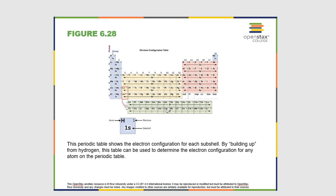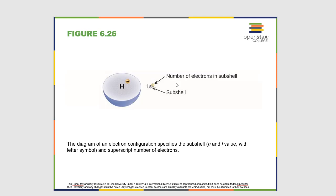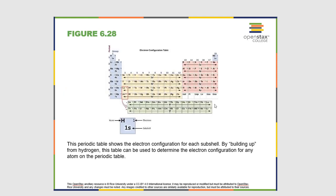The s block — groups 1A and 2A — is two atoms wide because the s orbital can hold two electrons. The p block is six atoms wide because the three p orbitals can hold six electrons total (two each). The d block is ten atoms wide because there are five d orbitals each holding two electrons. The f block is fourteen atoms wide because seven f orbitals hold a total of fourteen electrons.